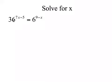In order to solve this, logs can be used, but I'm going to do it without logs. What I do is look at both bases and try to make them both have the same base. Can't you turn this into 6 squared? Watch this: this will be 6 squared to the 7x minus 5 equals 6 to the 9 minus x.